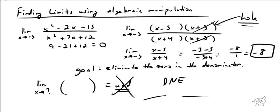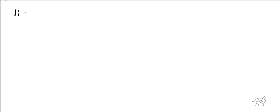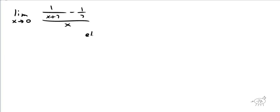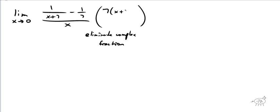Let's do a couple different types of problems. Limit as x approaches zero of one over x plus seven minus one seventh, all over x. I know I can't do this problem just by plugging in because right away I see I've got a zero in the bottom. So what we're going to do is eliminate the complex fraction. We're going to multiply by the common denominator, which is seven times x plus seven — and of course, what you do to the top you've got to do to the bottom.